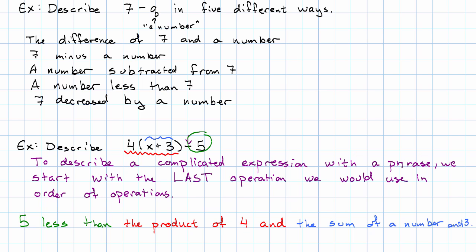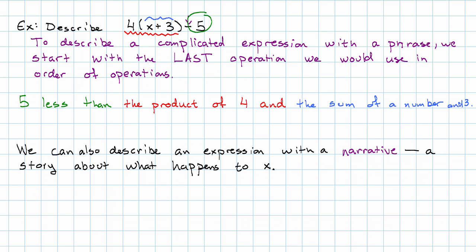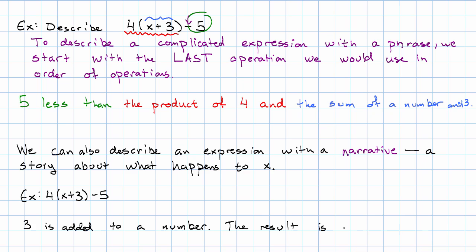There's another way that we could describe an expression. We can also describe an expression as a story about what happens to x. So I'm going to do the same example that way and we'll look at the difference. In order to give a narrative, I'm going to start with what I do first. Three is added to a number first, then the result is multiplied by four, and then finally that result is decreased by five.